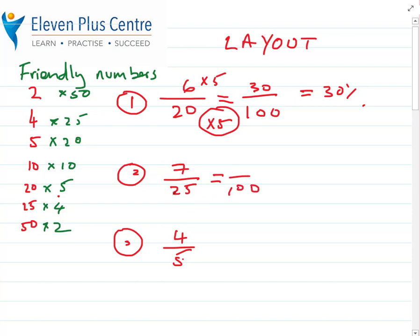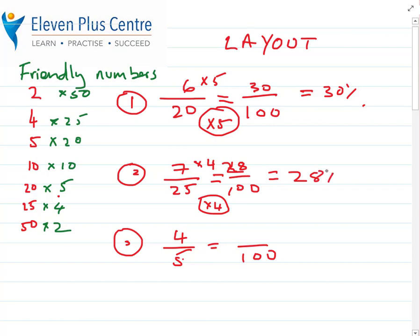Layout again. What number turns 25 into 100? The magic number is 4. Whatever we do to the bottom we do the same to the top: 7 times 4 is 28. So that's 28 over 100, which is the same as 28 percent. And for the last one — what number turns 5 into 100? 5 times 20 makes 100, that's my magic number. Whatever I do to the bottom I do the same to the top: 4 times 20 is 80.